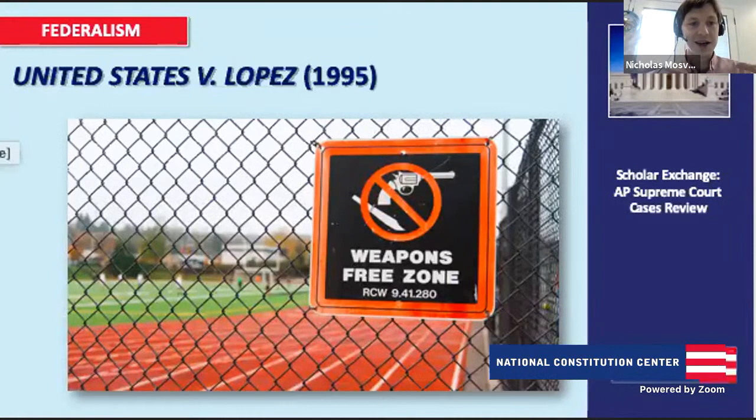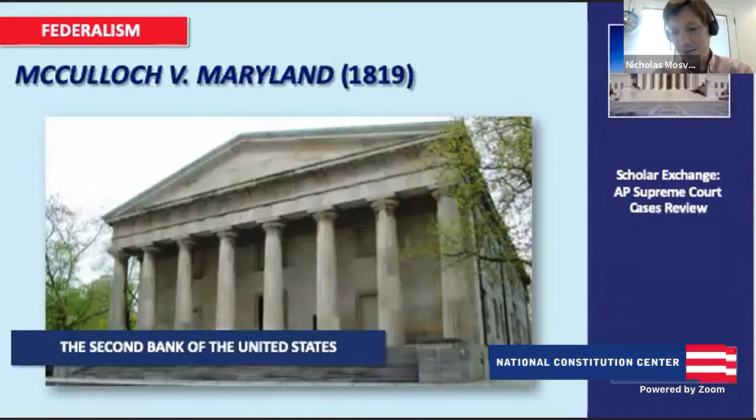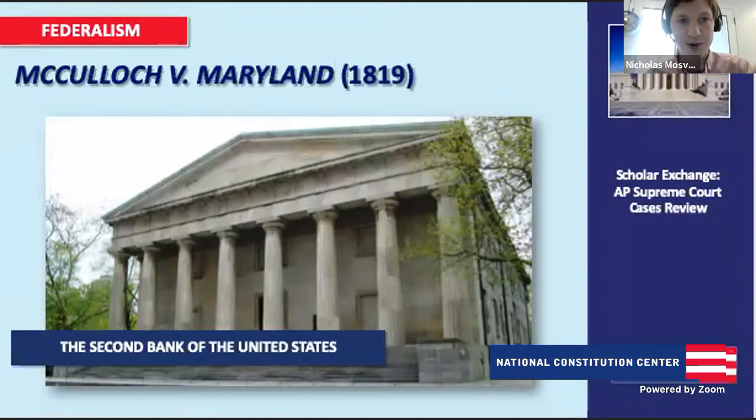The Supremacy Clause means that if the national government acts, national law is supreme over state law — it trumps state law. So the state's objection doesn't matter here because the national government has acted and created the national bank. The Necessary and Proper Clause means Congress gets to choose the means by which it carries out its enumerated powers. It has limited powers, but for those given by Article I, it chooses how to carry them out, as long as it doesn't choose improper means.